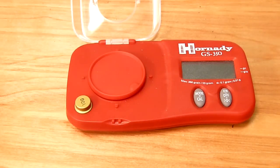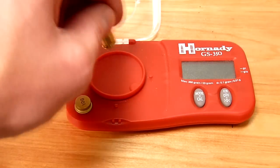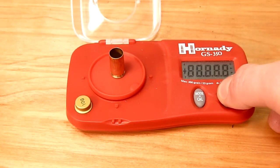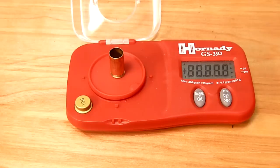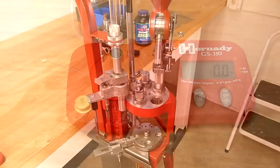To confirm our powder charge, we're going to take a piece of spent 9mm brass and put it on our scale. We're using a Hornady GS350 in this particular case. We're going to turn the scale on, and that will zero out the scale to this particular piece of brass with no powder in it.